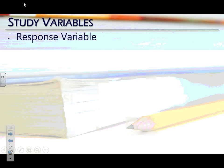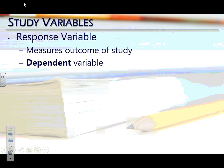Within a study, we're going to be looking at what variables are being measured and how those variables relate. There are two different types of variables when working with these problems. The first is called the response variable — it's the variable that's the measure of the outcome of the study, also called the dependent variable.